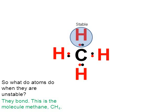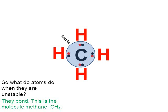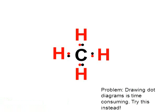The carbon in the middle has eight electrons, which also makes carbon stable — because eight is the desired number to make the second level stable. So when they bond, all the atoms become stable.